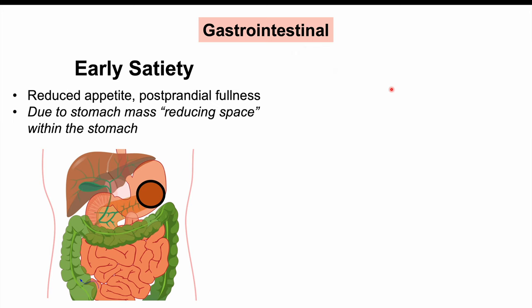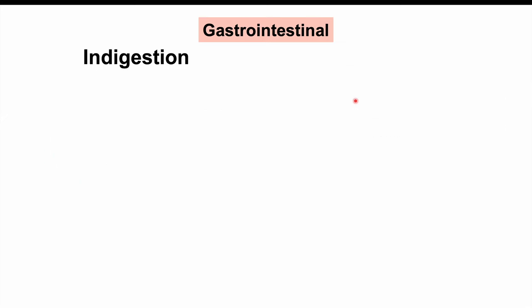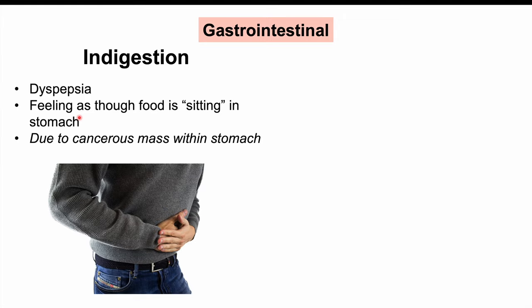Another important symptom of gastric cancer is nausea and vomiting. The cancerous mass in the stomach presses on the stomach and surrounding structures, leading to nausea and sometimes vomiting, with nausea being especially common. We can also see indigestion or dyspepsia — a feeling as though food is just sitting in your stomach — again due to the cancerous mass within the stomach.